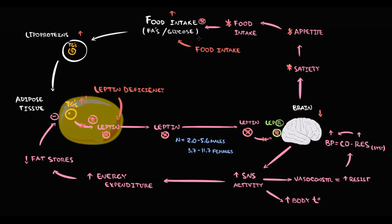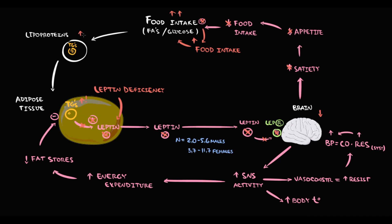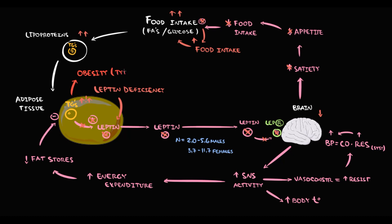So even after food intake, we want more food, because we do not have a proper feeling of satiety. Then we intake another portion of food, so the income of triacylglycerols into the adipose tissue increases even more. The highest amount of triacylglycerols in the adipose tissue, the larger becomes the adipose tissue mass. So obesity develops. And because in this case obesity is caused by leptin deficiency, we call this obesity type 1.